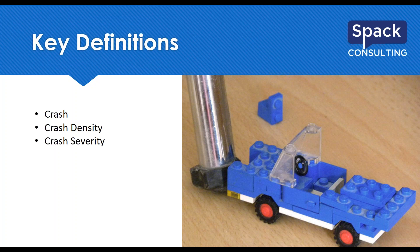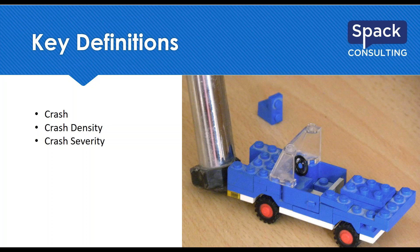Crash severity talks about the seriousness of the crash and the impact on the drivers. We subdivide this into several categories. A fatal crash is type K — deaths that have occurred as a result of the crash. Incapacitating injury is type A — injuries from the crash serious enough to prevent normal activity for at least a day. That could be blood loss, broken bones, anything that is going to stop someone from their normal everyday activity.